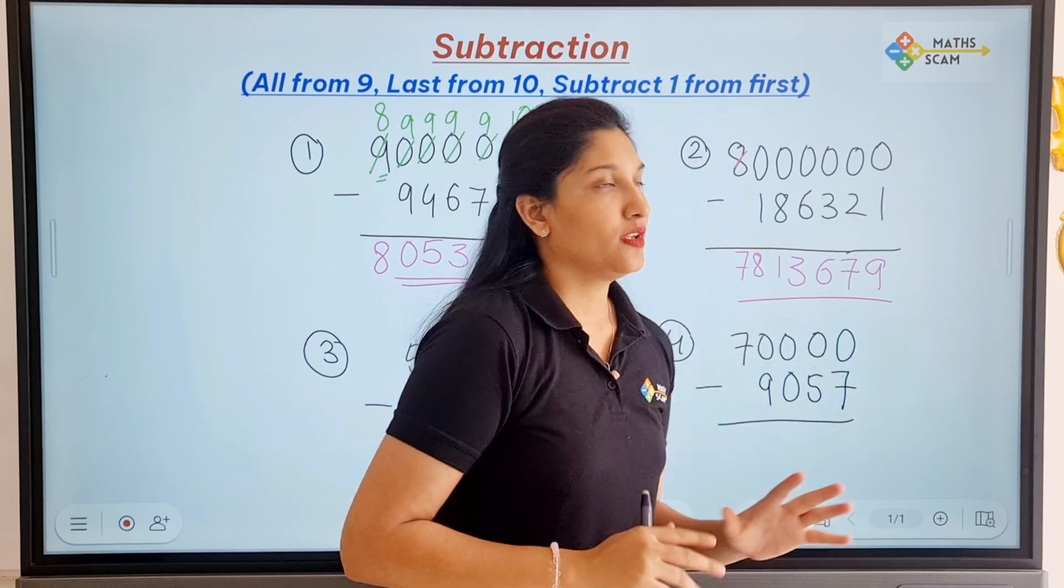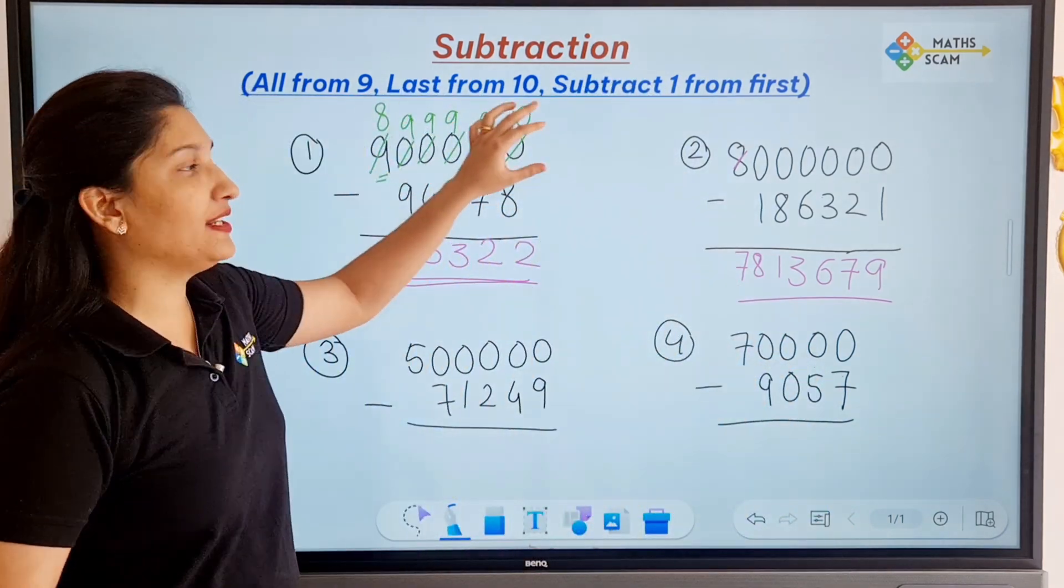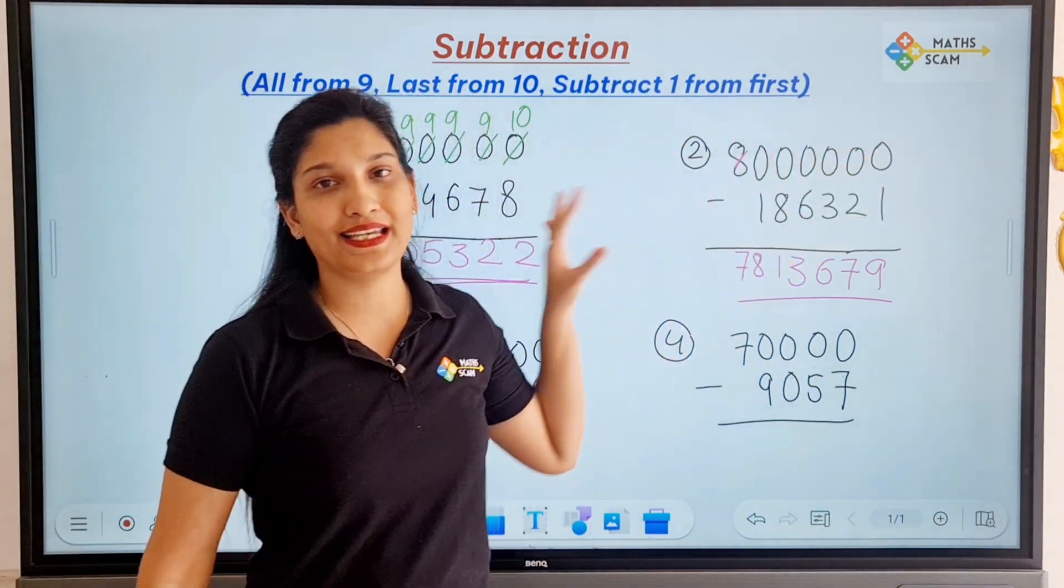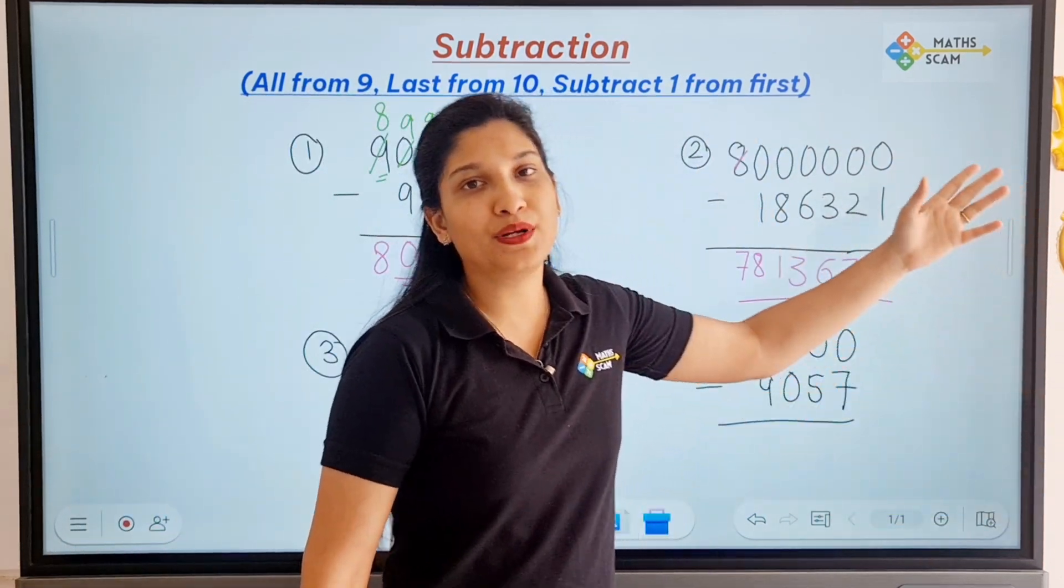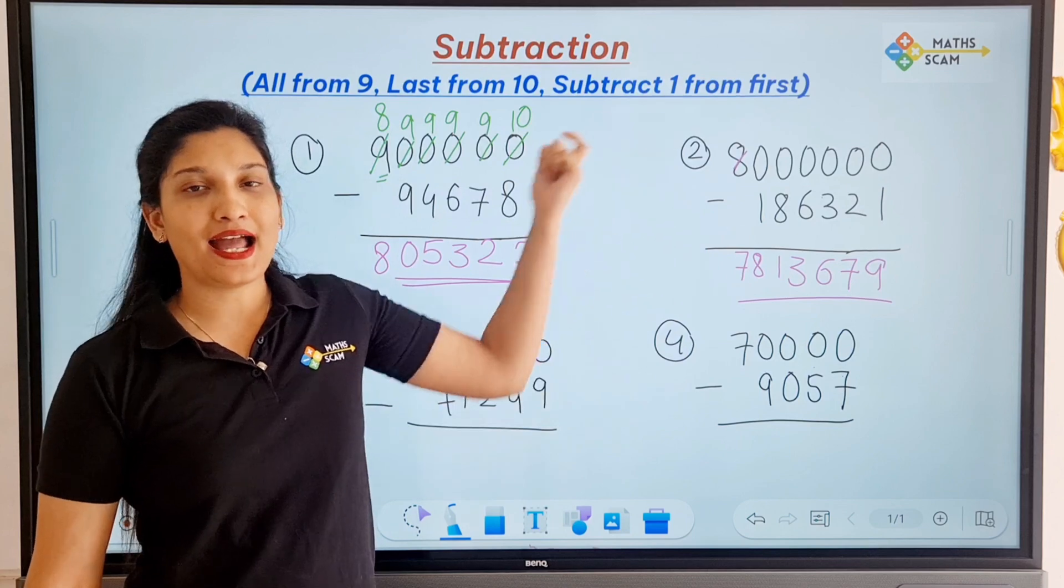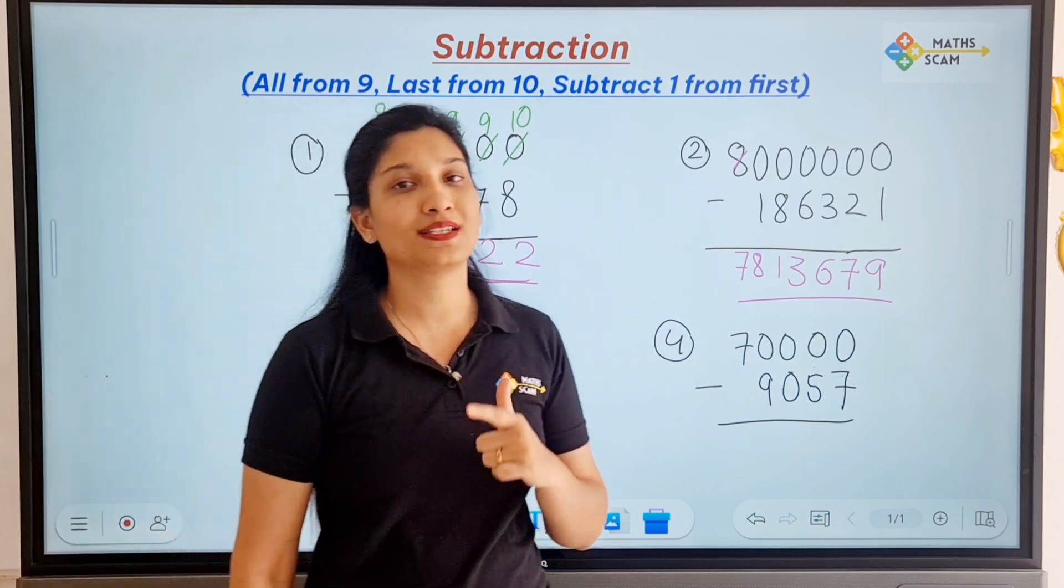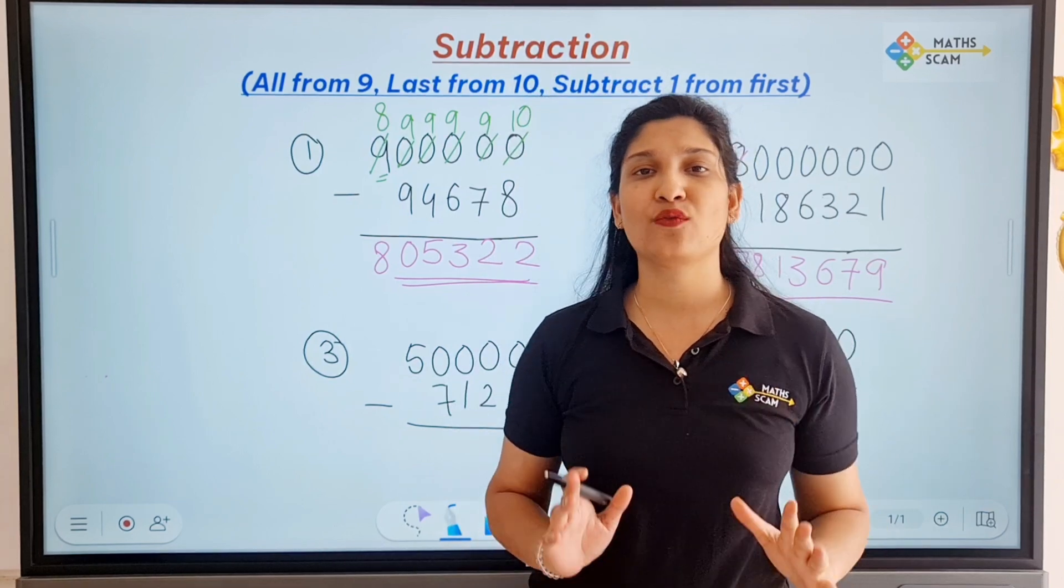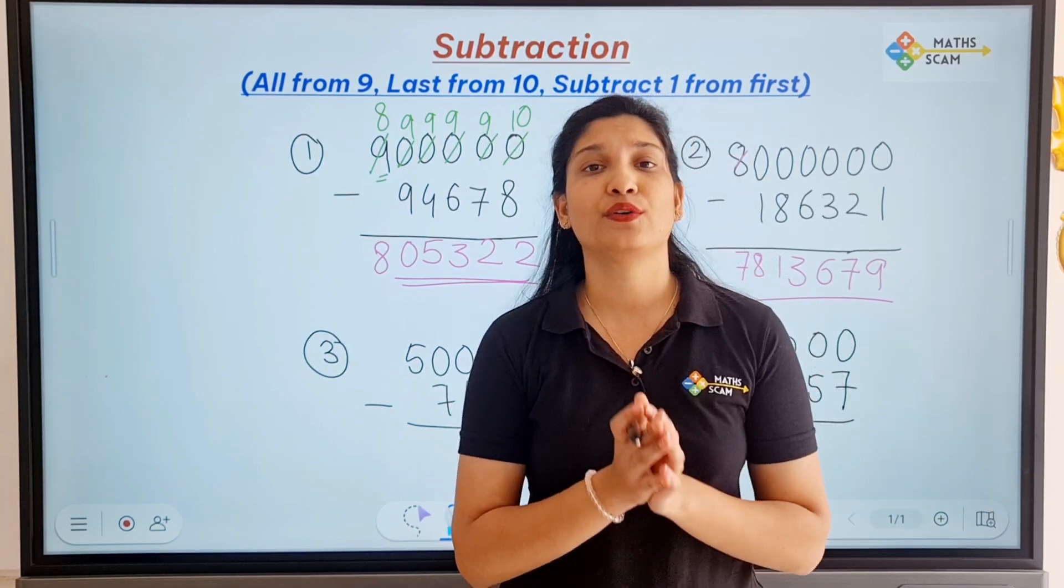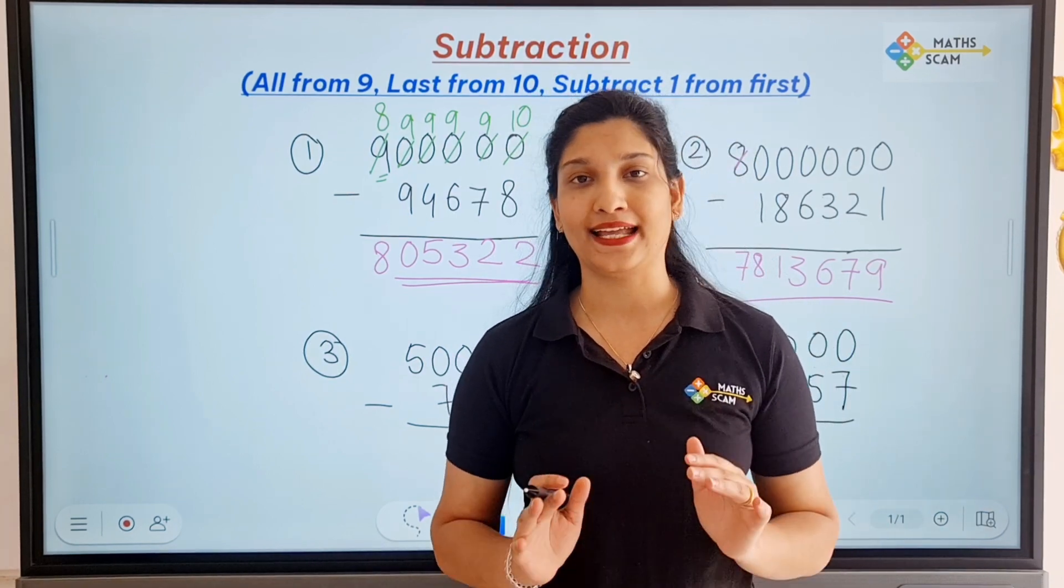So without actually writing everything, we can do all those things in our mind. Just remember the last digit from 10, middle 0s from 9, and the first digit subtract 1 from that digit. That's it, you can solve any question easily within 2 to 3 seconds.